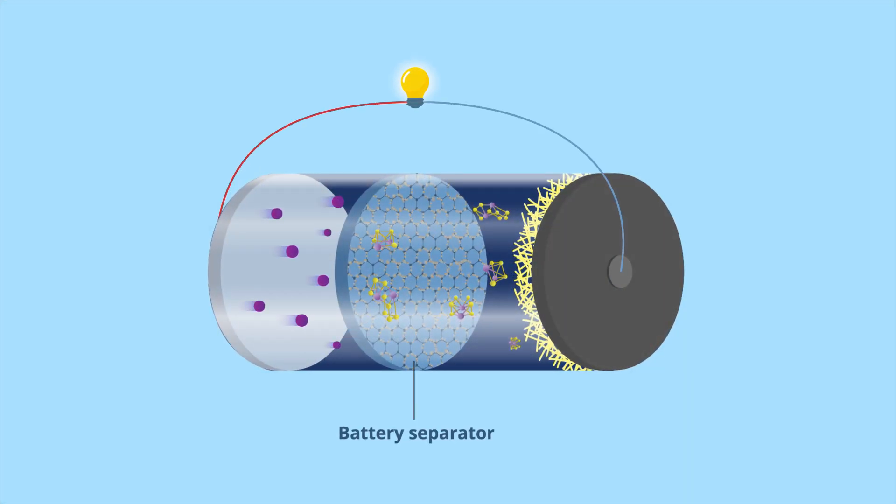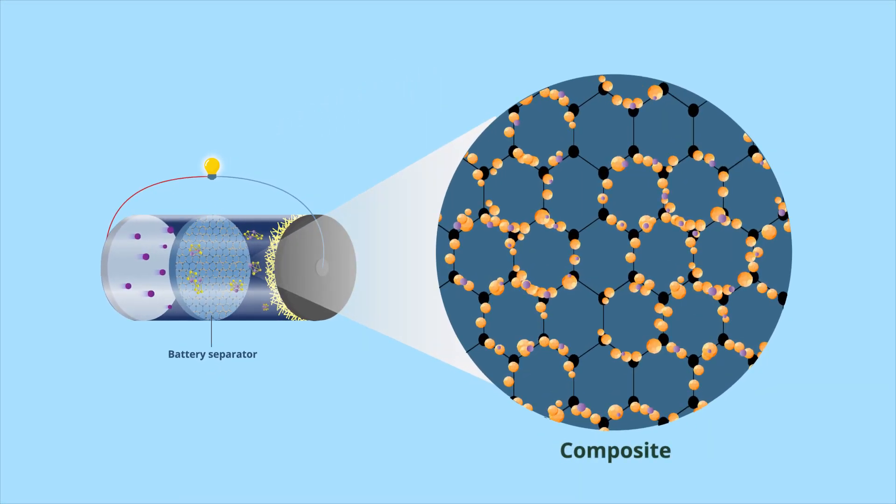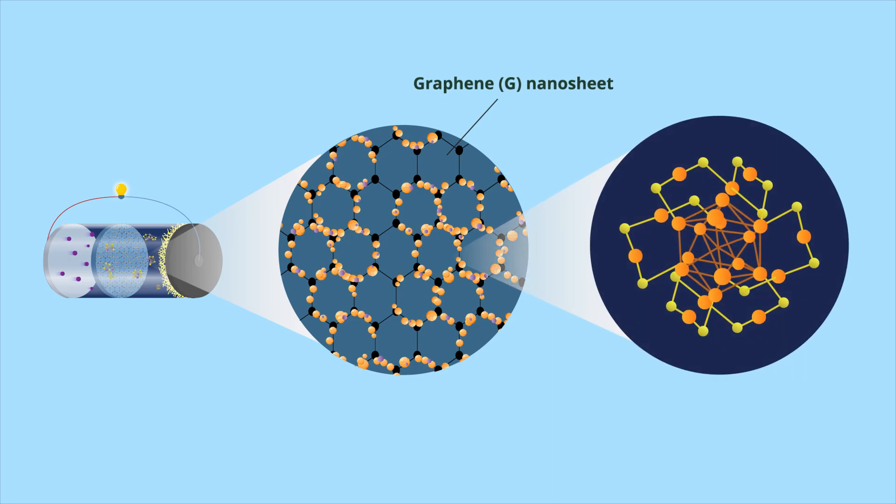They developed a battery separator based on a composite of platinum-doped gold nanoclusters Au24PtPET18 and graphene nanosheets, called Au24PtPET18@G.